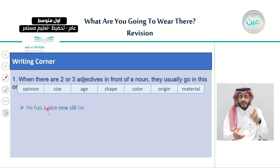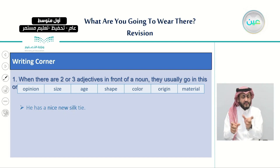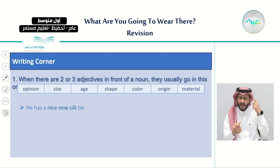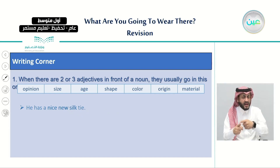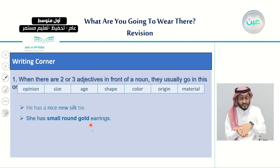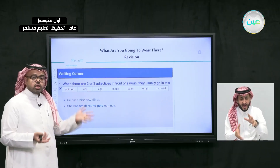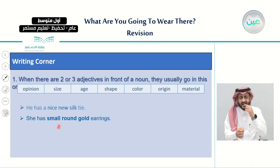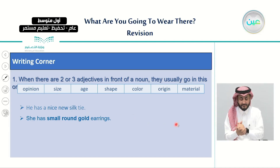For example: he has a nice new silk tie. 'Nice' is an opinion, 'new' is the age, and 'silk' is the material. Another example: she has small round gold earrings. 'Small' is the size, 'round' is the shape, and 'gold' is the material.